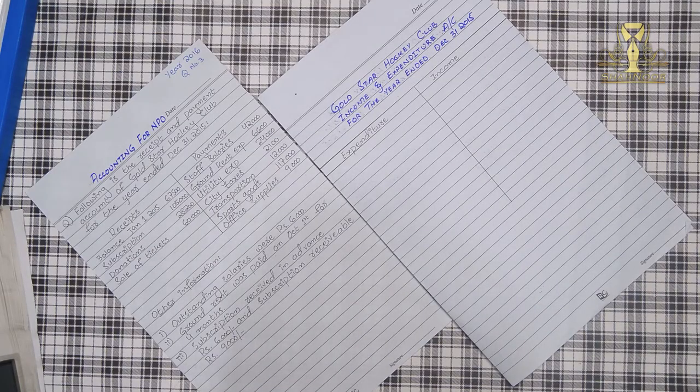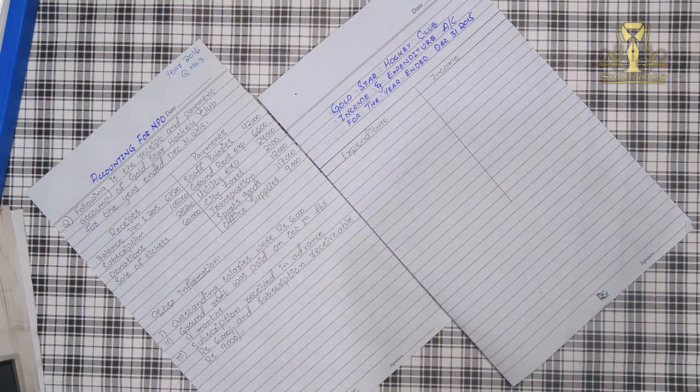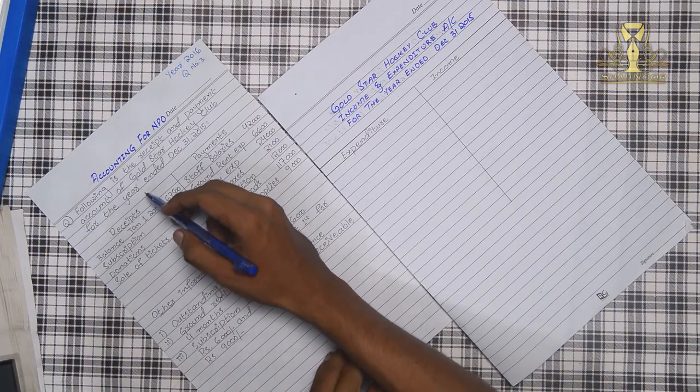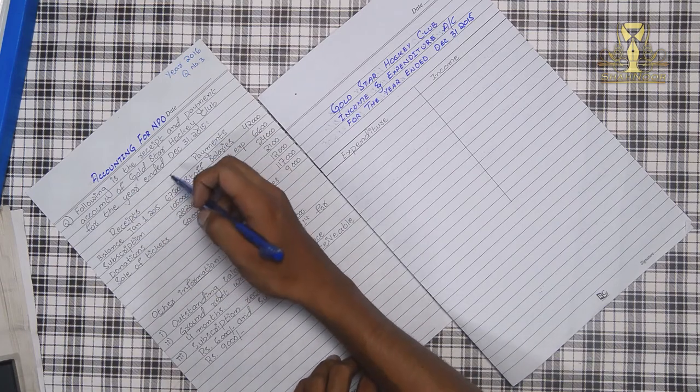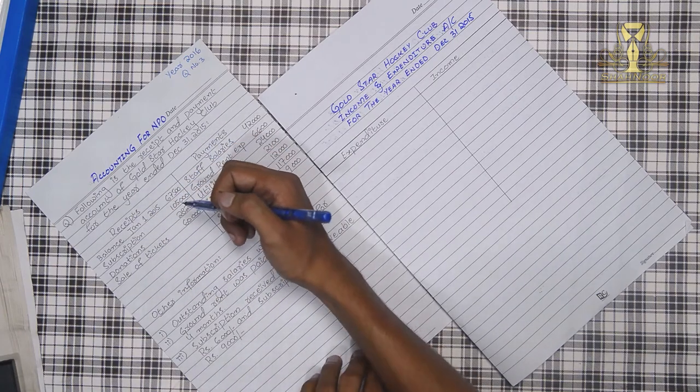This chapter starts our accounting for NPO. Today we are solving question number 3. The following is the receipt and payment account of Gold Star Hockey Club for the year ended December 31st, 2015.